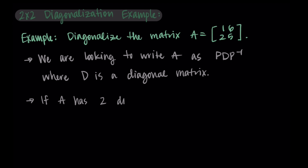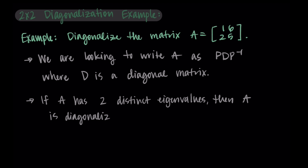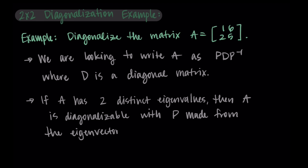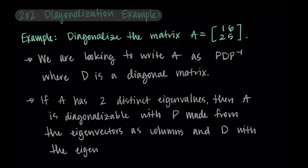How we know whether or not we can do this comes from the eigenvalues. If A has two distinct eigenvalues — meaning two different eigenvalues — then A is diagonalizable, where P is made from the eigenvectors as the columns and D is made from the eigenvalues on the diagonal.